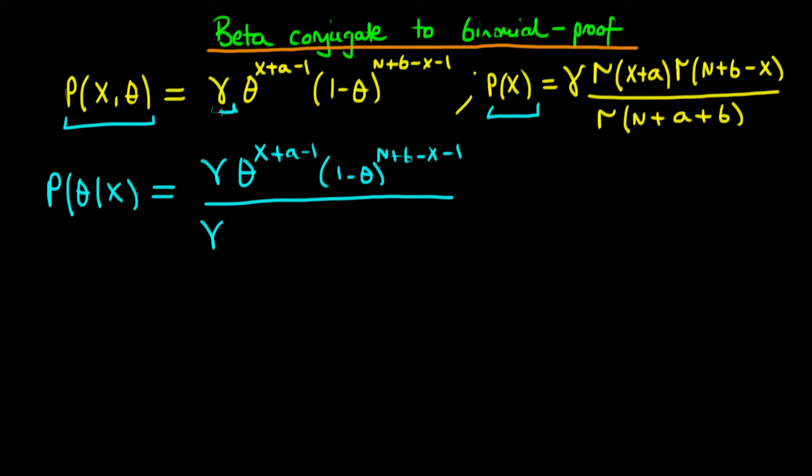Remember, gamma is something which I defined in the last video. It's itself a gamma function of various parameters. So this marginal probability equals gamma times the gamma function of x plus a times the gamma function of n plus b minus x, all divided by the gamma of n plus a plus b, which is the same as multiplying by the denominator.